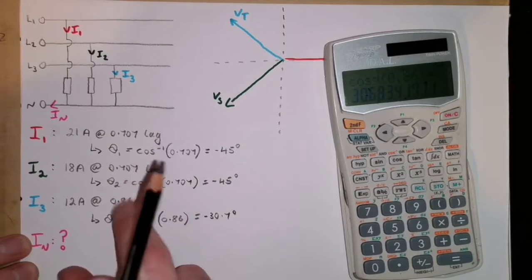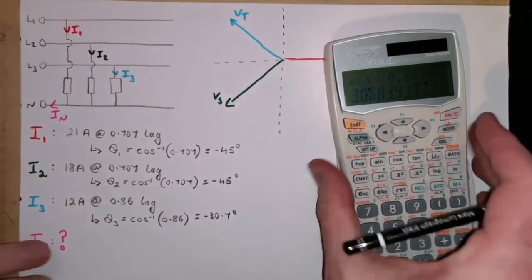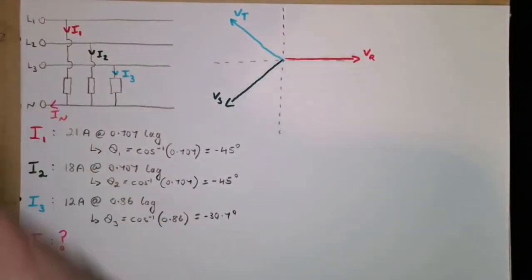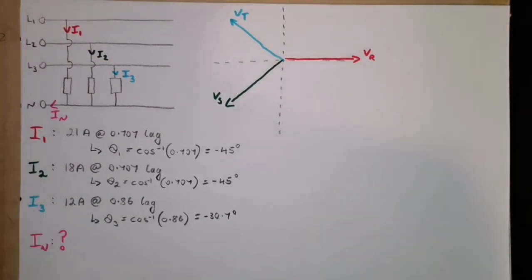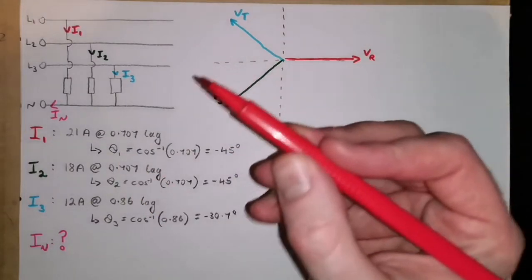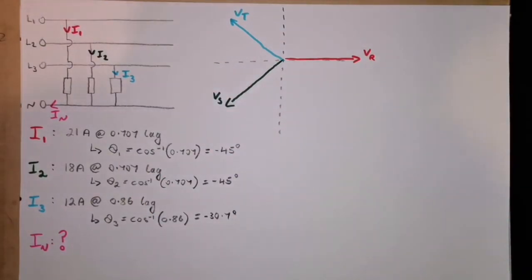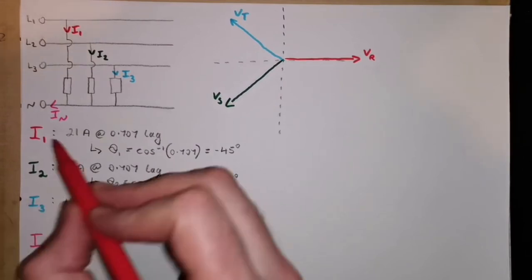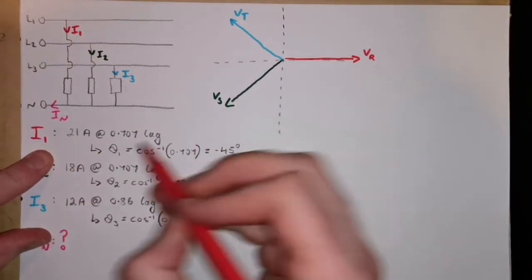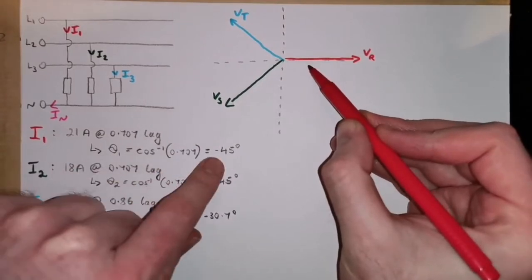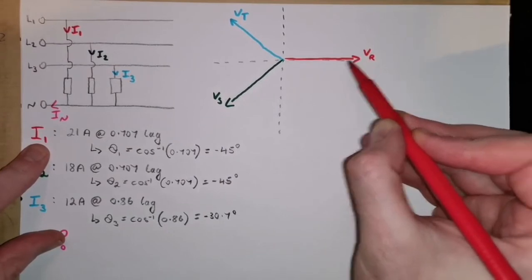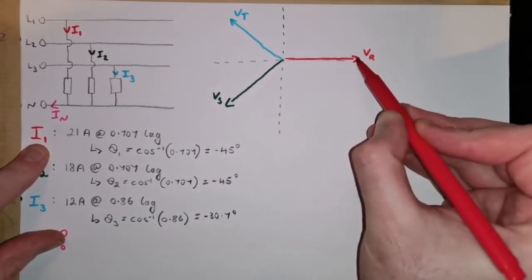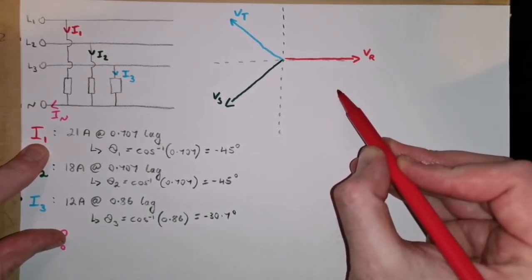What we've done here is we've gotten the phases of each of our currents relevant to the voltage that's driving it. Let's mark those on our phasor diagram to help us explain what that means. And I'll do them with a dashed line in the same color, just so it splits them up. Our first one, I1, is 21 amps at minus 45 degrees. So, this is I1, which is related to the r phase, so it's at 0, minus 45 degrees.